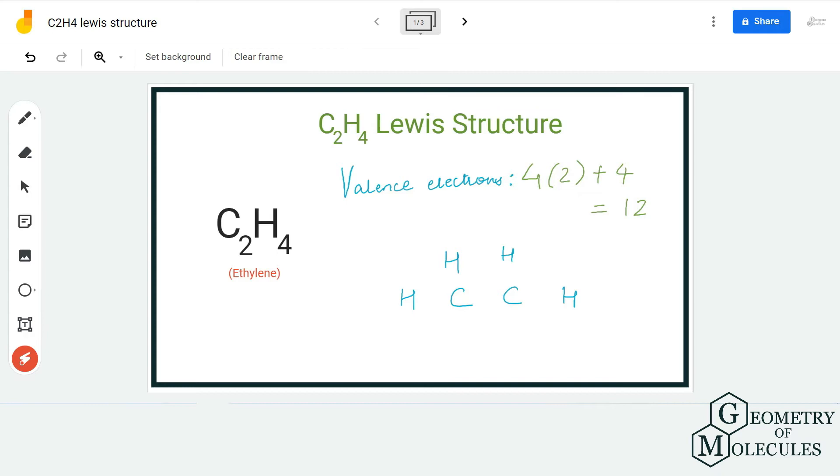Now we are going to place both carbon atoms next to each other like this. We will place two hydrogen atoms on this carbon and two hydrogen atoms around this carbon. So this would be the arrangement of the atoms in this Lewis structure.